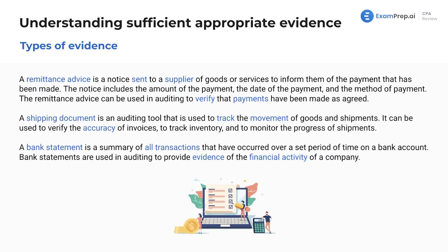Now we're going to run through the actual physical types of evidence — these are just different pieces of paper or electronic documents. These are items you may see on other exams as well; however, these are going to be the types of evidence that you collect as the auditor. You're going to sample transactions, pick out certain transactions you want to test, and then based on those transactions you are going to get certain pieces of evidence.